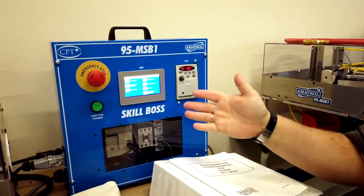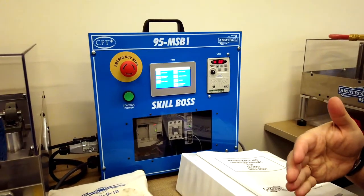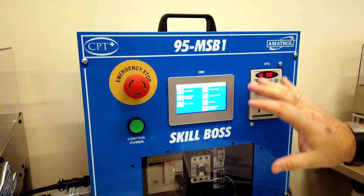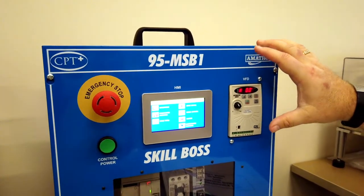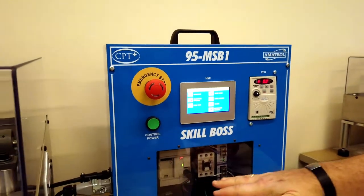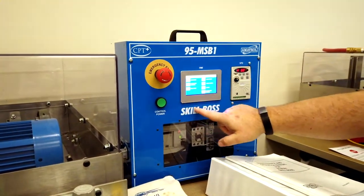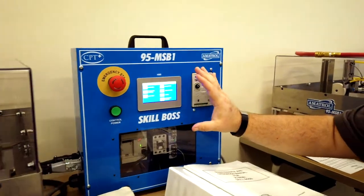This is one of our Skill Boss trainers. Skill Boss simulates a production atmosphere. This is the control interface for the Skill Boss. It houses a PLC and some contactors that allow it to actually operate the motors, and this is an HMI which is a human interface machine.